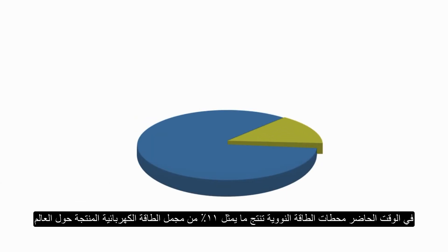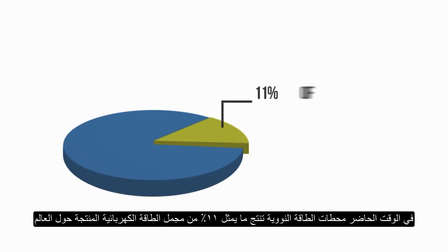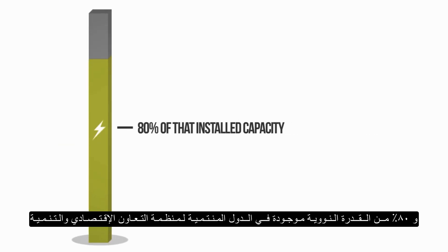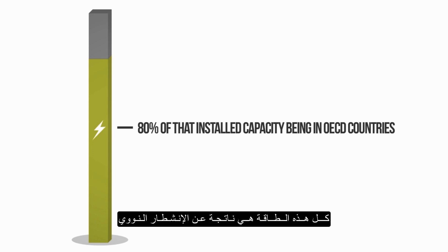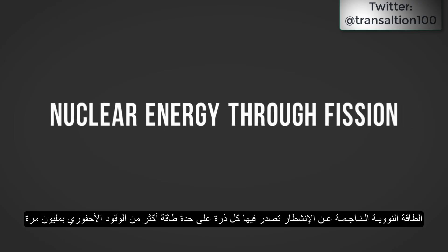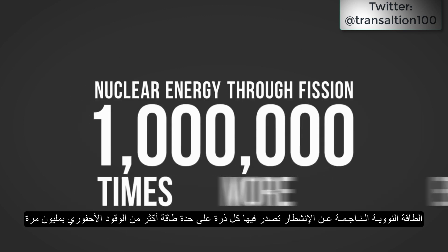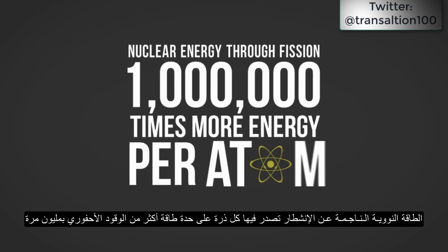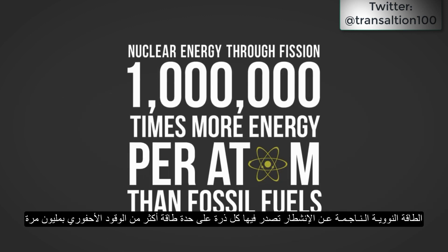Today, nuclear power plants account for 11% of global electricity generation, with about 80% of that installed capacity being in OECD countries. All of this capacity is nuclear fission. Nuclear energy, through fission, can release one million times more energy per atom than fossil fuels.